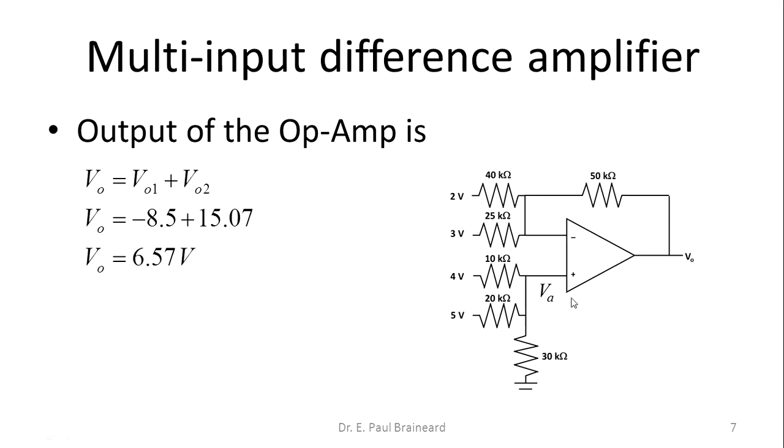The output voltage of this difference amplifier with four inputs, two inverting and two non-inverting inputs, is 6.57V. Thank you.